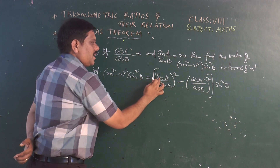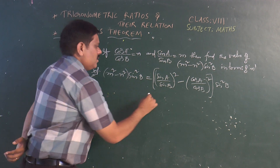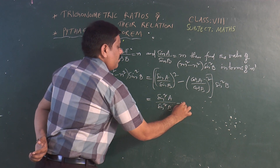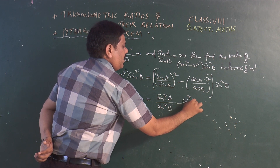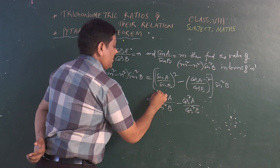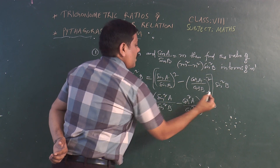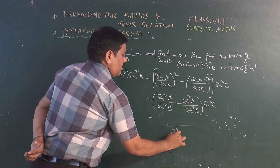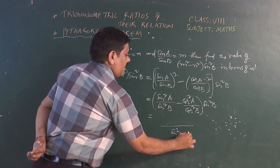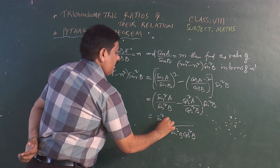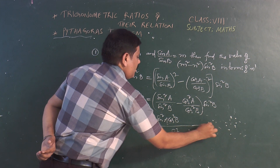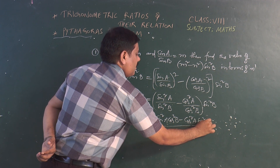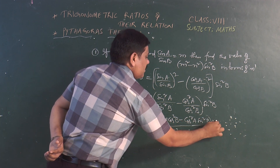That is going to be sin² A / sin² B minus cos² A / cos² B. So let us cross multiply. We have sin² A cos² B minus cos² A sin² B, all times sin² B.